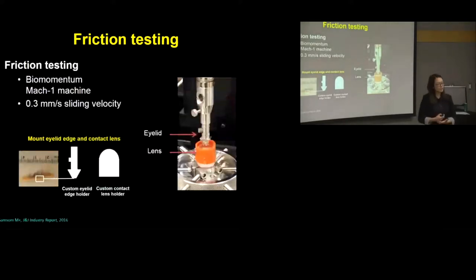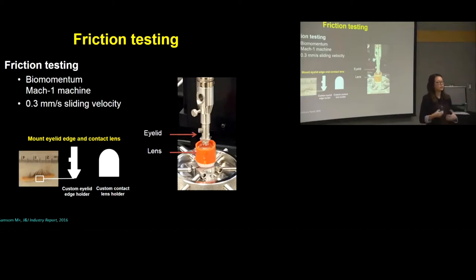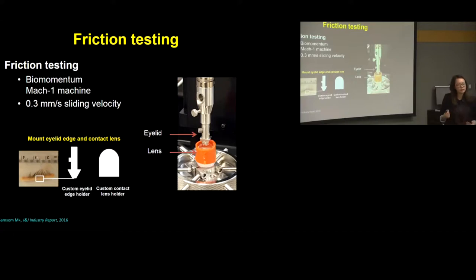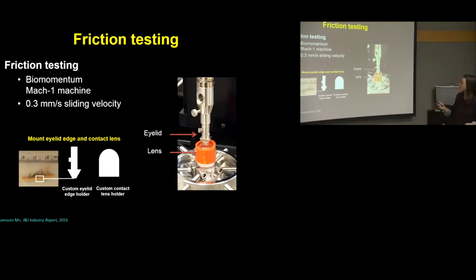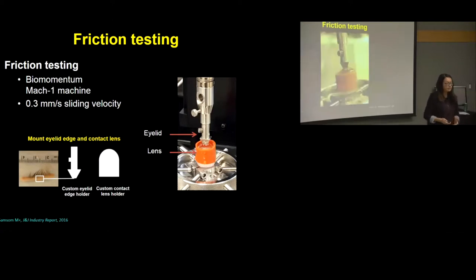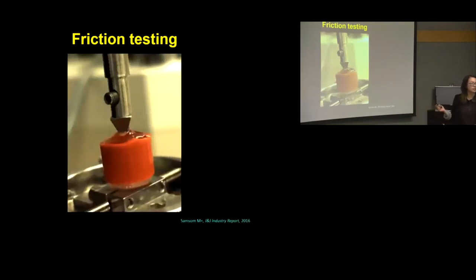Friction testing was carried out using the BioMomentum Mach1 machine, which allows us to articulate two surfaces against each other. We cut out a small piece of eyelid and mounted it on a custom eyelid holder, while contact lenses were mounted on a custom lens holder. A silicone sleeve was placed over the setup to create a lubricant bath, keeping the lens in solution during testing. The eyelid articulates at a sliding velocity of 0.3 millimeters per second against the contact lens.